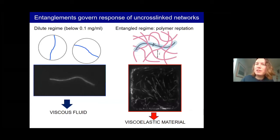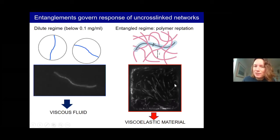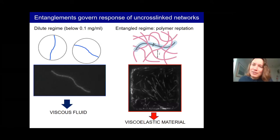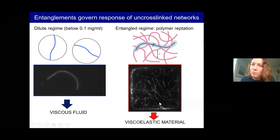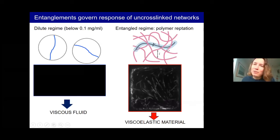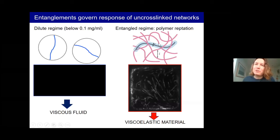When the actin concentration is high enough that filaments entangle, you reach the entangled regime. A movie shows fluorescently labeled actin filaments in a background of unlabeled entangled actin — the labeled filaments move primarily along their length. This is the famous reptation behavior: each polymer is caged in a virtual tube formed by contacts with other polymers. It is relatively easy for the polymer to move along its length, but very difficult to move transversely because of the entanglements.